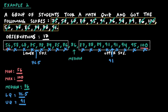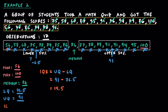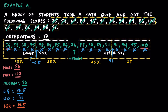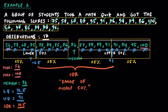Now that we have the five essential points, let's calculate the IQR. This is going to be the upper quartile minus the lower quartile, or 91 minus 76.5, and we find the IQR is equal to 14.5. Essentially, this means that the middle 50% of the scores were within 14.5 points of each other. We've separated all the data into four categories of 25% each, with the IQR representing the range of the middle 50% of scores.